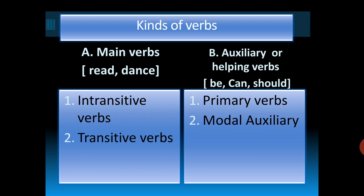Now, talking about the kinds of verbs, there are two basic divisions: main verbs and auxiliary or helping verbs. Main verbs are all those actions which we can see — like read, dance, cook, sleep, eat. Auxiliary verbs support the main verb. When we need helping verbs in present continuous tenses or present perfect tenses, they are called auxiliary or helping verbs.